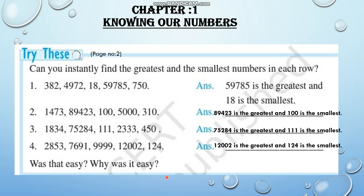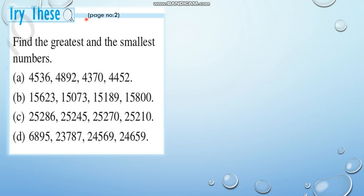Now let's move to the next textual exercise, also from page number 2: find the greatest and smallest numbers. In the previous questions, the numbers had different numbers of digits, making it very easy. Here the numbers have the same number of digits, so you have to apply the second procedure and check the leftmost digits and compare.